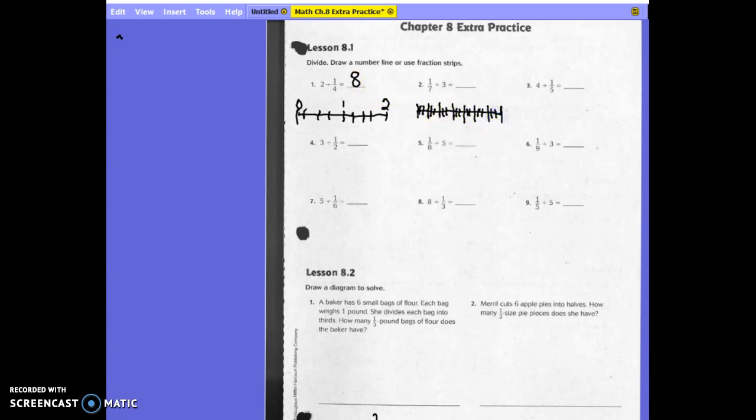Now how many parts do I have? 21 parts. So 1 seventh divided into 3 is 1 twenty-first.